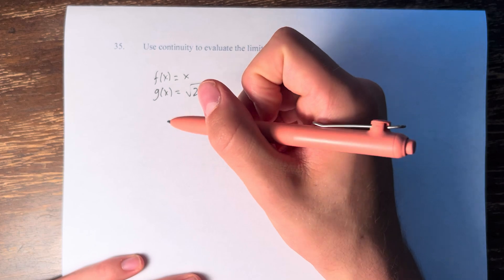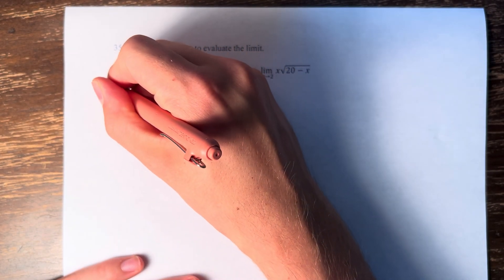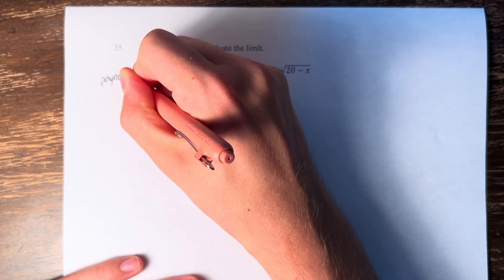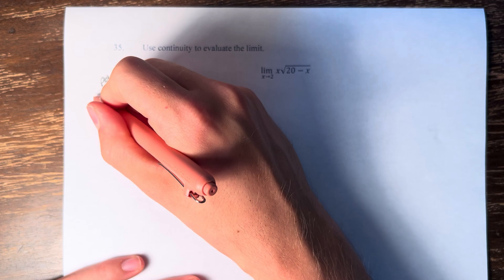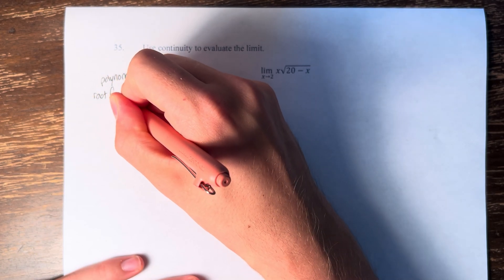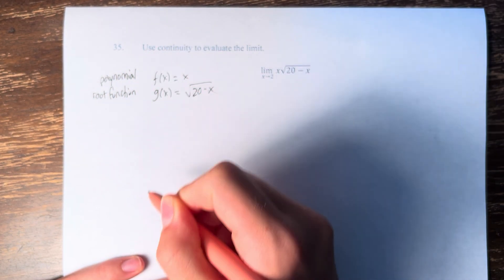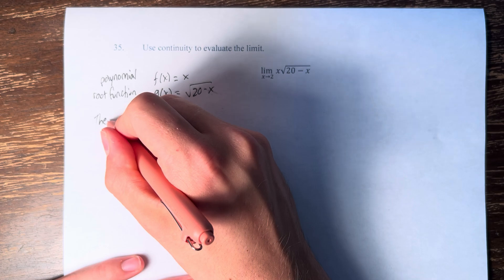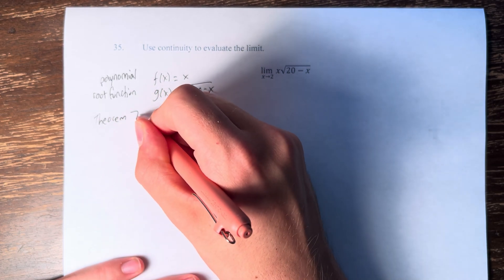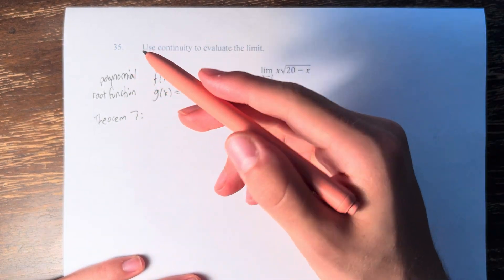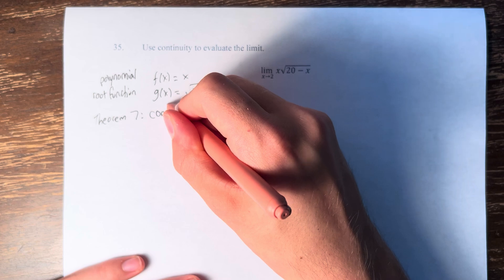And these functions, x is a polynomial, and g of x is a root function. We know from theorem 7 that both of these functions are continuous over their domains.